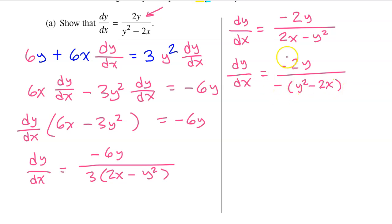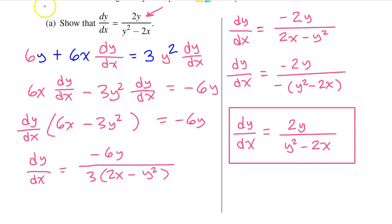Factoring out a negative sign and switching up the order gives us this in the denominator. Obviously, on the last step, these negatives will cancel each other out. And we are left with dy/dx equals 2y over y² minus 2x, which is the target.